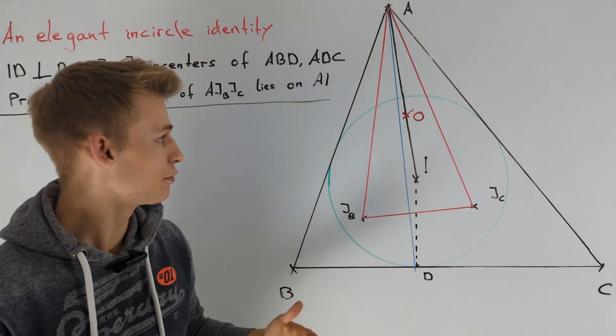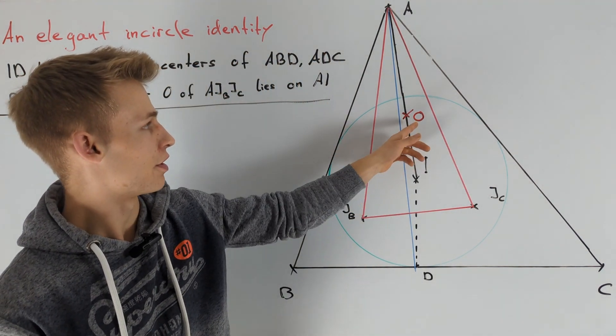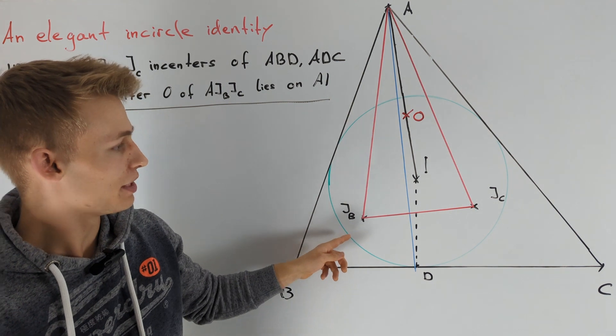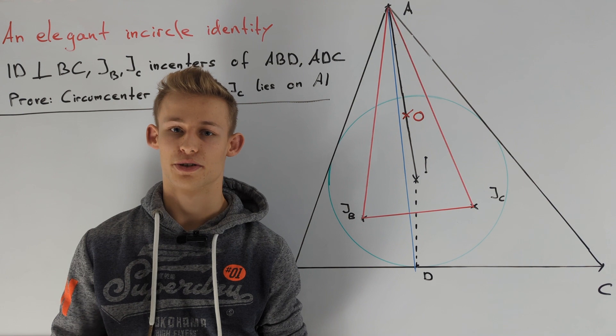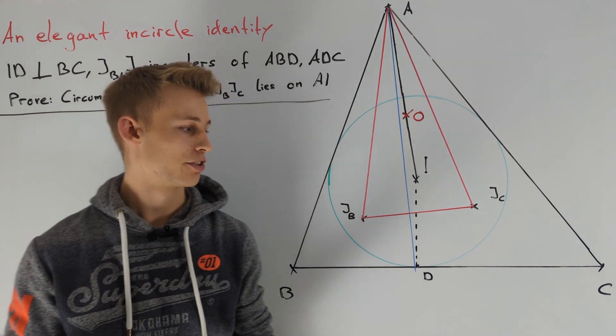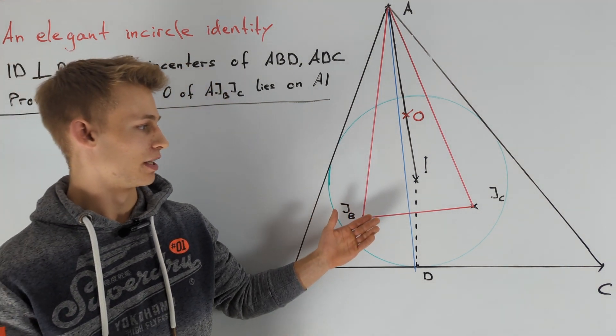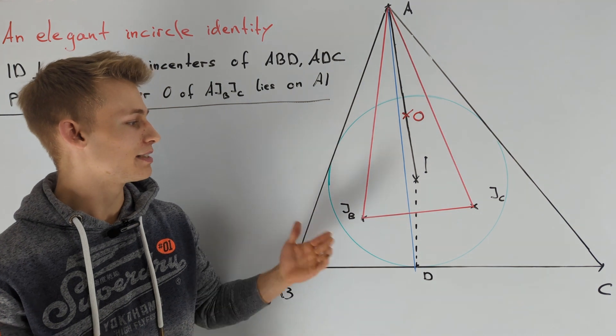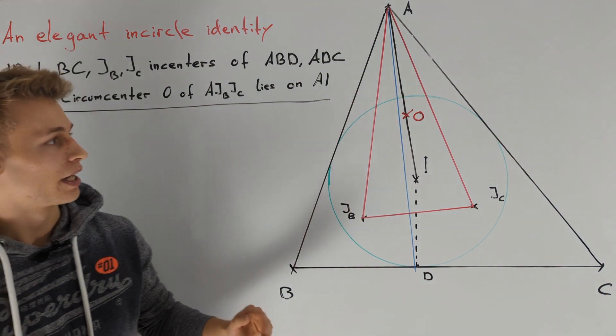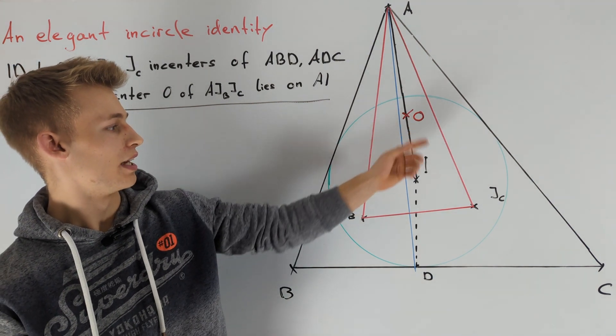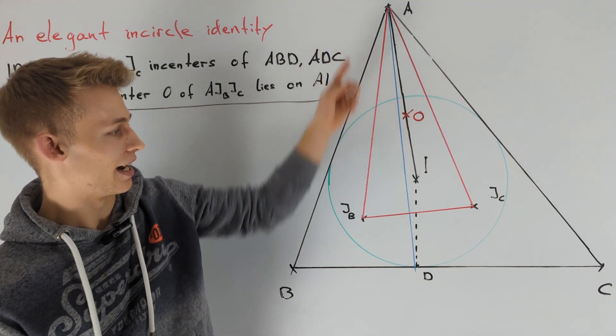We're asked to prove that the circumcenter O of triangle AJBJC lies on line AI. When solving a geometry problem, it's a good idea to understand the picture by calculating angles. We're interested in point O and want to prove it lies on line AI.